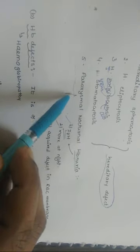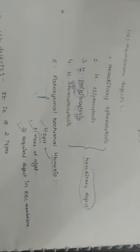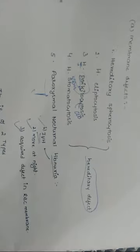To summarize membrane defects: hereditary spherocytosis, hereditary elliptocytosis, hereditary poikilocytosis, and hereditary stomatocytosis are all hereditary defects. PNH is an acquired defect in the RBC membrane. PNH is not hereditary because paroxysmal means sudden attack — a sudden attack cannot be hereditary.